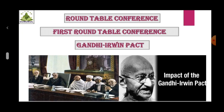Without the participation of the Indian National Congress, which represented the country, the deliberations in the Round Table Conference were indeed meaningless. The British Prime Minister expressed hope for Congress participation in the second Round Table Conference. In view of this appeal, the Viceroy released Mahatma Gandhi and other leaders from prison, and a conducive atmosphere was created for Congress to discuss the issues freely.